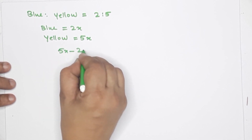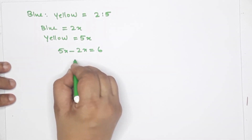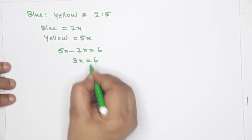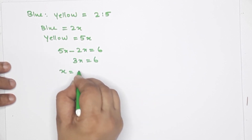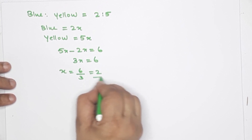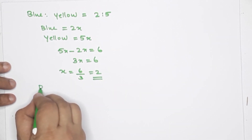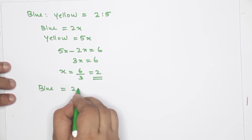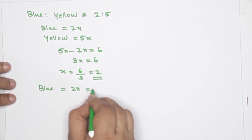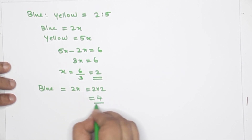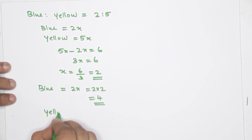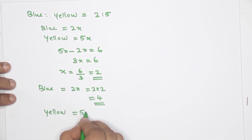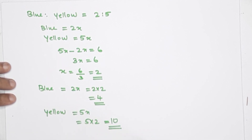5x minus 2x equals 3x, that is equal to 6, so x equals 2. Blue is 2x, that is 2 into 2, equals 4 liters of blue paint. Yellow is 5x, that is 5 into 2, equals 10 liters. Total 14 liters mixed.